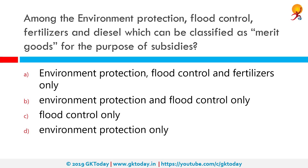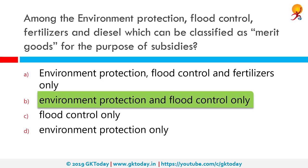Among environment protection, flood control, fertilizers and diesel — which can be classified as merit goods for the purpose of subsidies? The correct answer is environment protection and flood control only. A merit good is a product that society values and judges that people should have regardless of their ability to pay — for example, education. Consumption of merit goods is often argued to generate positive externalities, where the social benefit from consumption exceeds the private benefit.